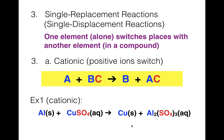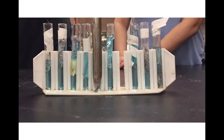To balance the aluminum/copper sulfate reaction: I have one Al on the left but two in Al2(SO4)3, so put a 2 in front of Al. Coppers: one on each side, good. Sulfate: one on the left, three on the right, so put a 3 in front of CuSO4. That changes coppers to 3, so put a 3 in front of Cu on the product side. That gives us the balanced cationic single replacement reaction.